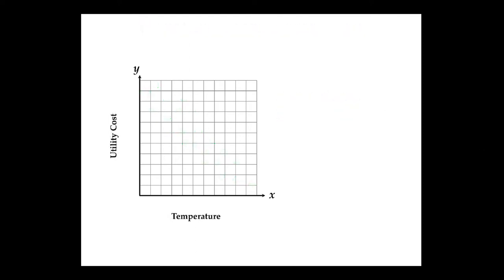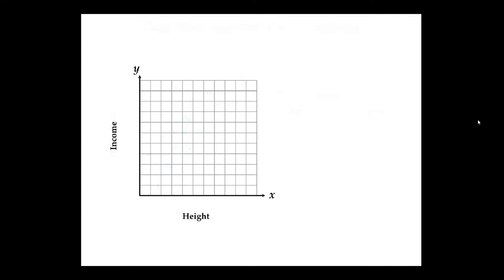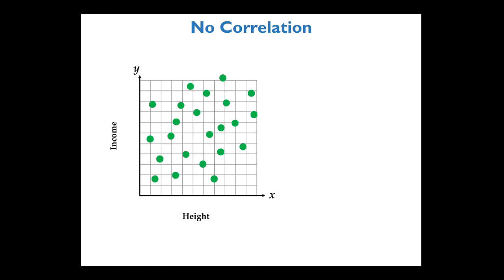A scatter plot of temperature versus utility costs might trend upward, which has a positive linear correlation — the scatter plot appears to follow an upward line. A positive linear correlation is described as: as X increases, Y tends to increase as well. So as temperature increases, utility costs go up. For something like height versus income, there's really no correlation, so the scatter plot would just be dots scattered around with no clear pattern.